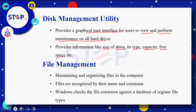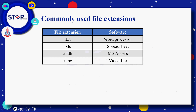File management — computer میں different types of files کو کس طریقے سے maintain اور organize کرنا ہے، یہ آپ کی file management کراتی ہے۔ Files اپنے names اور extensions کے ذریعے identify کی جاتی ہیں — Windows different types of files کی extensions کو compare کرتا ہے against database of registered file types اور matching extension والے particular software میں open کر دیتا ہے۔ مشہور file extensions میں .txt word processor کے لئے، .xls spread sheets کے لئے، .mdb Microsoft Access کے لئے، اور .mpg video files کے لئے استعمال ہوتی ہے۔